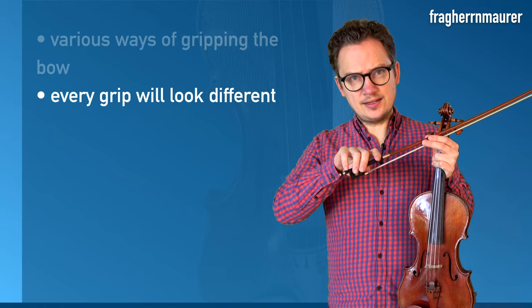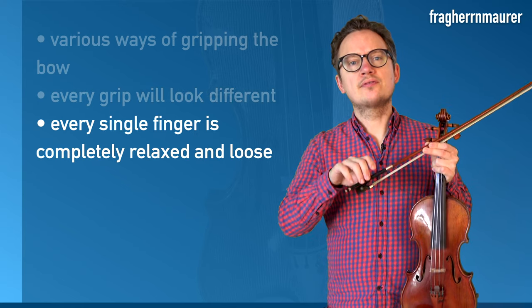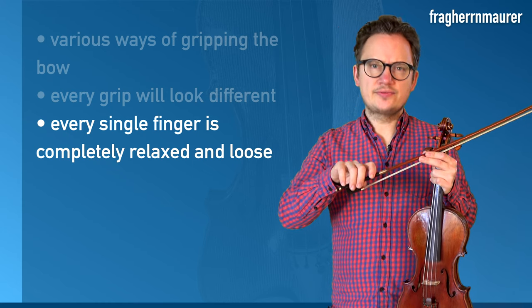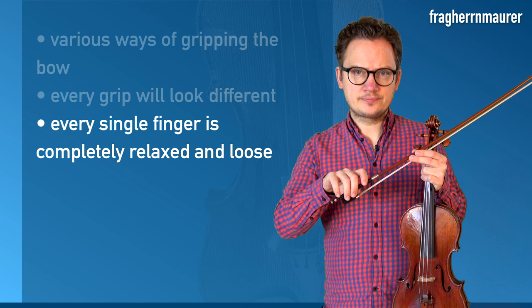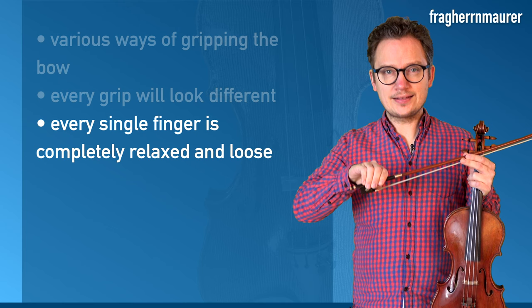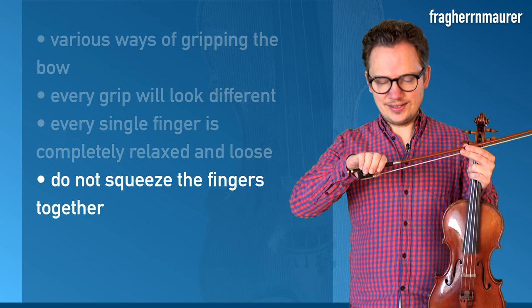The most important thing is that every single finger, including the thumb, is completely relaxed and loose when gripping the bow. Try imagining them as small springs or shock absorbers. This is the only way to get a round and full tone. Be careful not to squeeze your fingers together as this generates an unnatural tension.